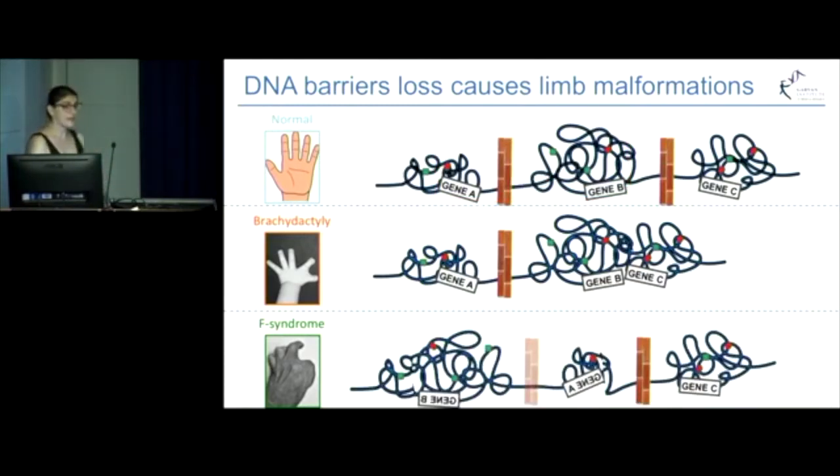What this means is that even though the barrier is still in place, these gene A and B have been placed in a completely incorrect context, once again accessing the wrong switches, giving rise to the malformation.